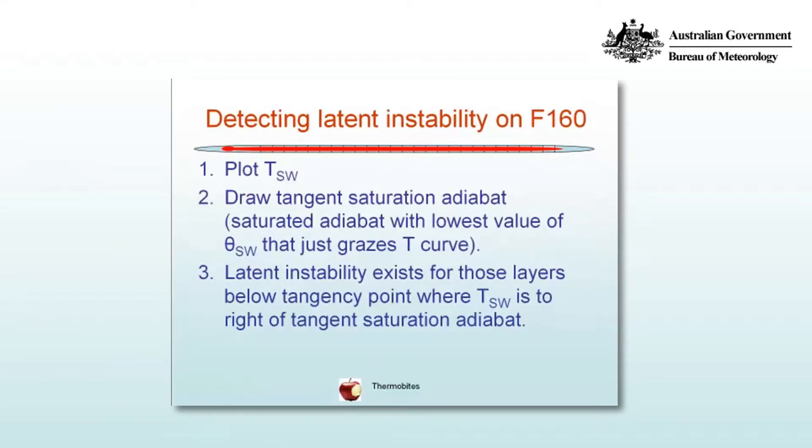We can assess latent instability on F160 by plotting the pseudo wet bulb temperature profile and then drawing a tangent saturation adiabat. That's a saturation adiabat that just grazes the temperature profile. Latent instability exists for those layers below the tangency point where T_SW is to the right of the tangent saturation adiabat.